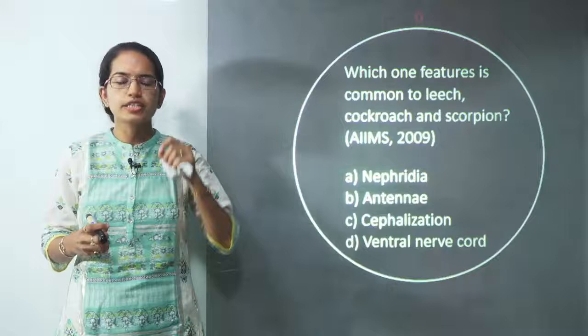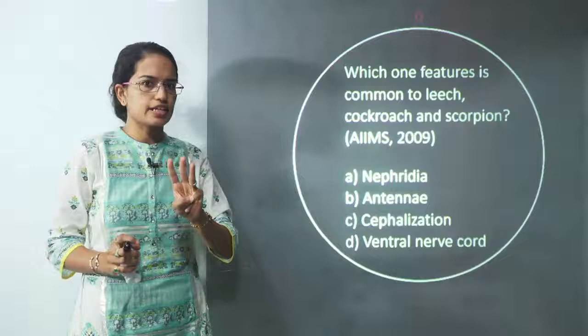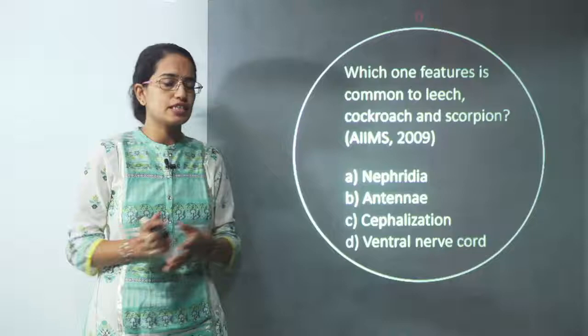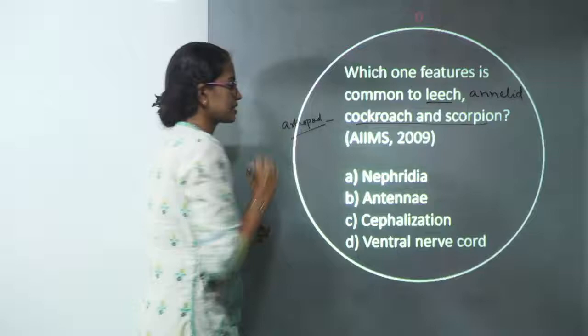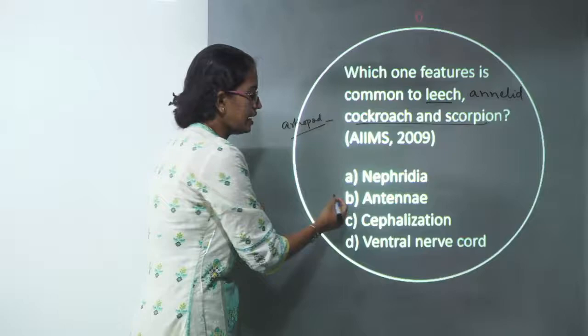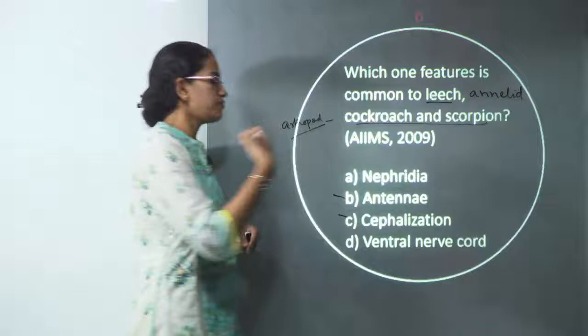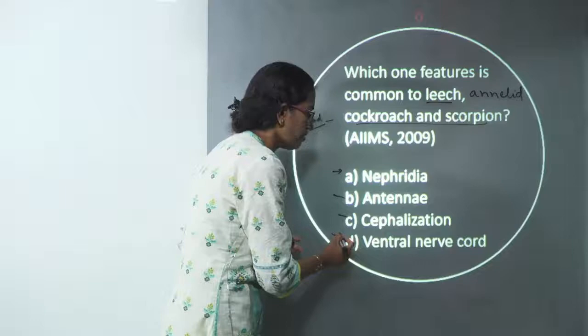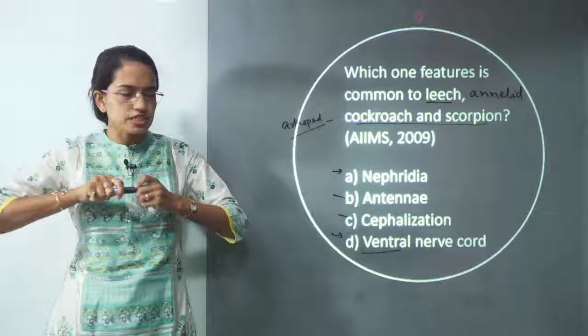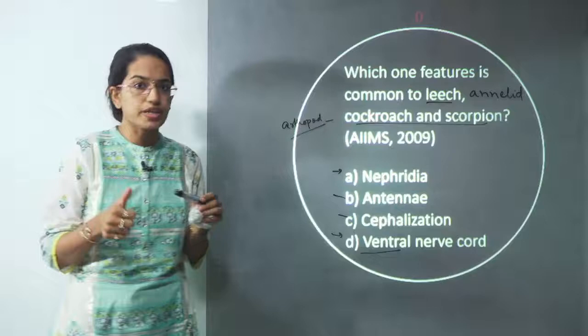The correct answer for this question is ventral nerve cord. There are three organisms: leech is an annelid, and cockroach and scorpion are arthropods. Characters of arthropods include antennae and cephalization — these are true for arthropods but not annelids. Annelids have nephridia. What is true for BOTH annelids and arthropods is ventral nerve cord, which is therefore the correct answer. D is correct.